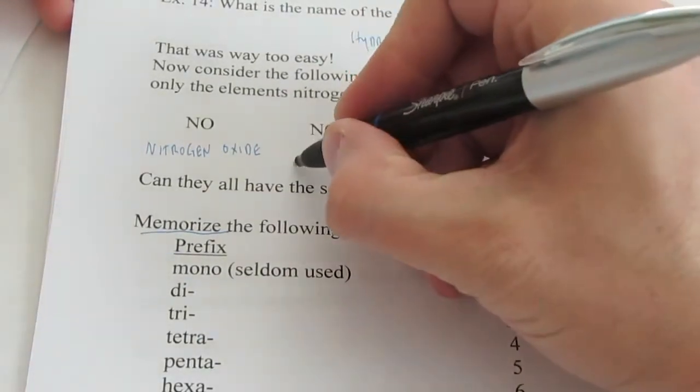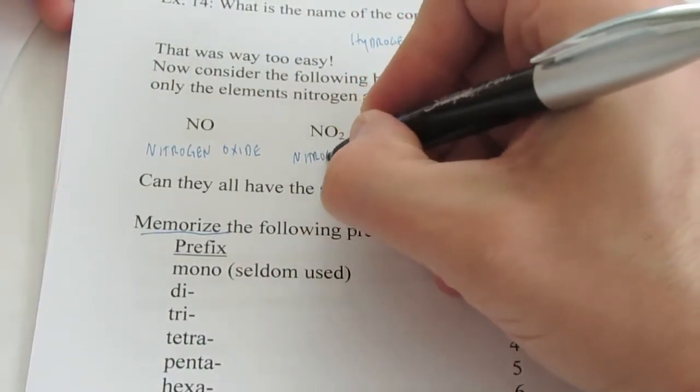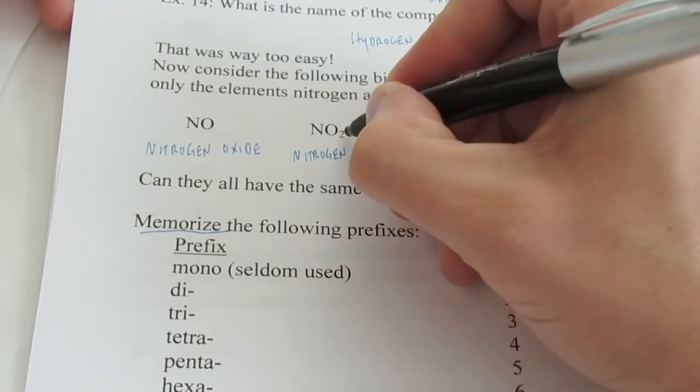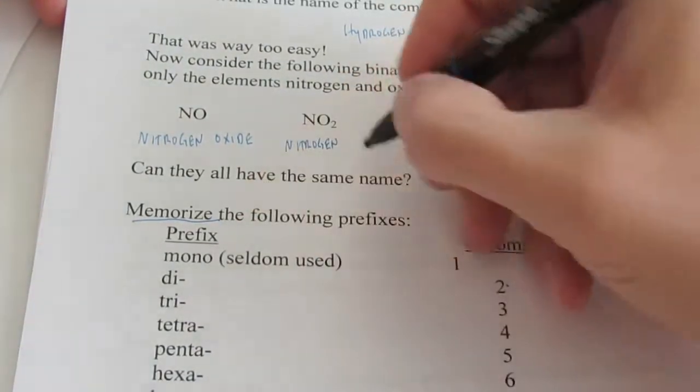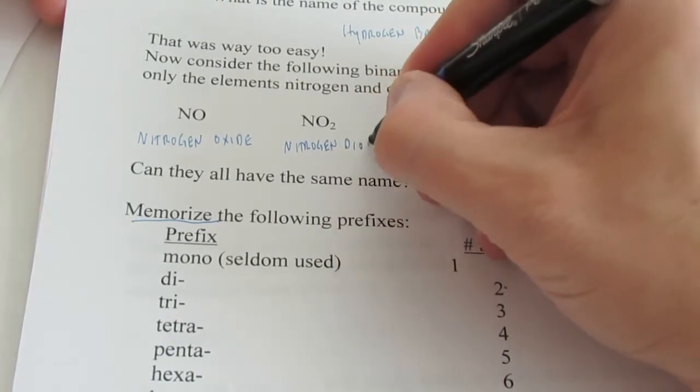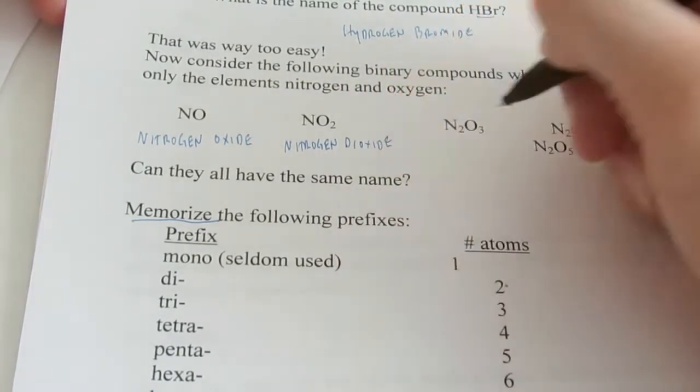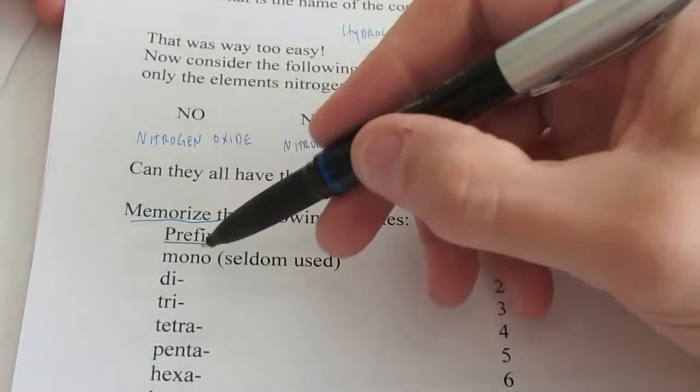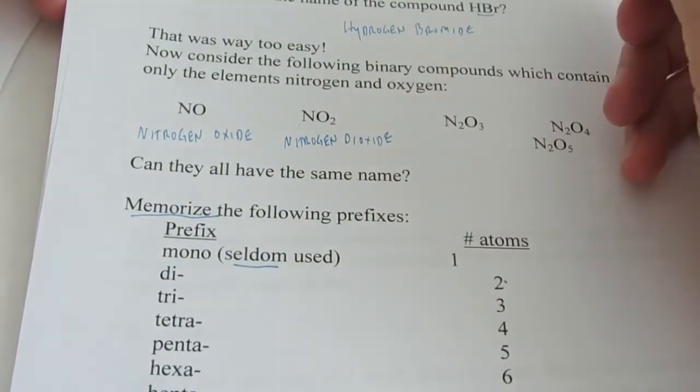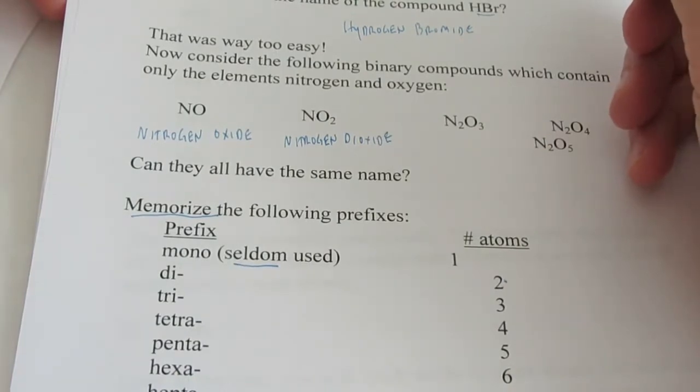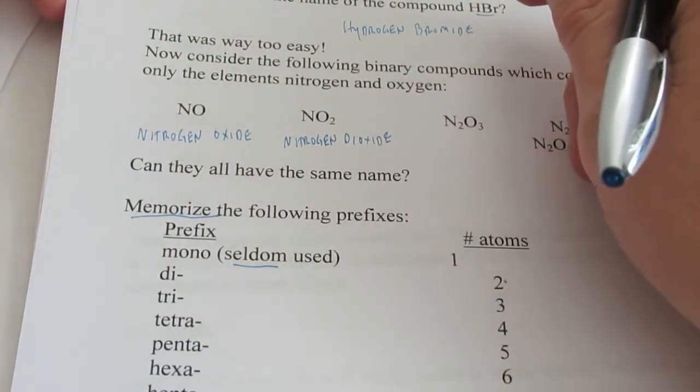So this one here I would call nitrogen, and I have two oxygens. So the prefix for two is di, so I'd say dioxide, nitrogen dioxide. Now, could I have said mononitrogen dioxide? Absolutely. But we don't really use the prefix mono very often. Occasionally we do, but not very often.